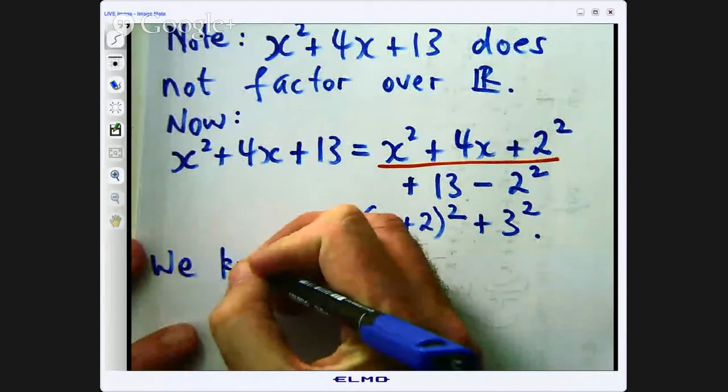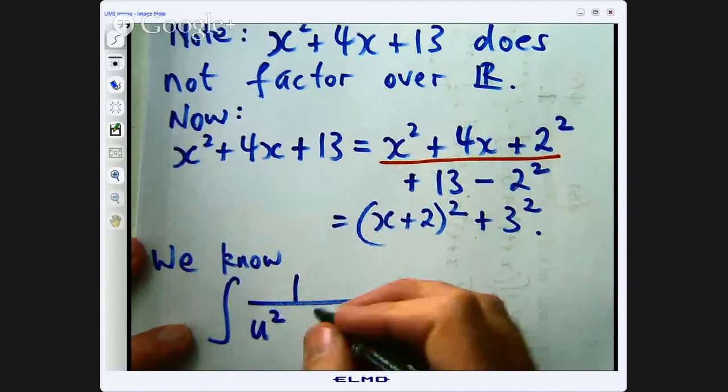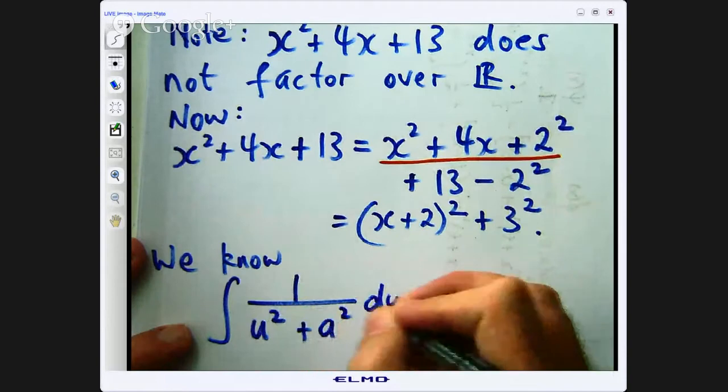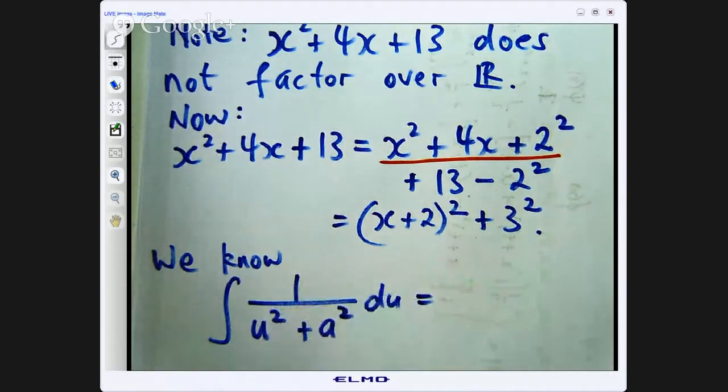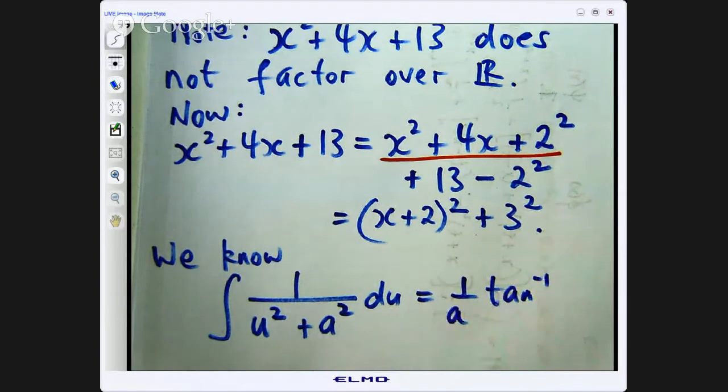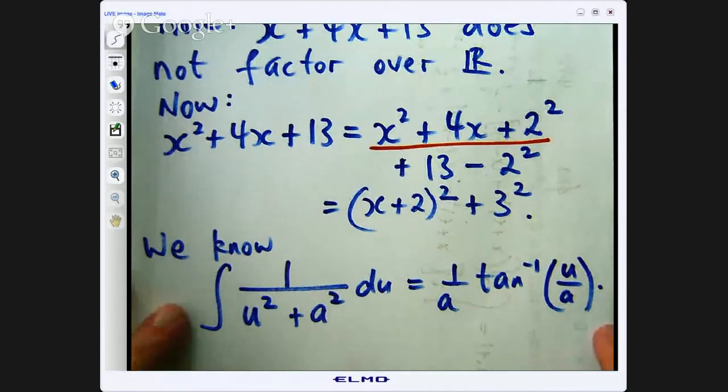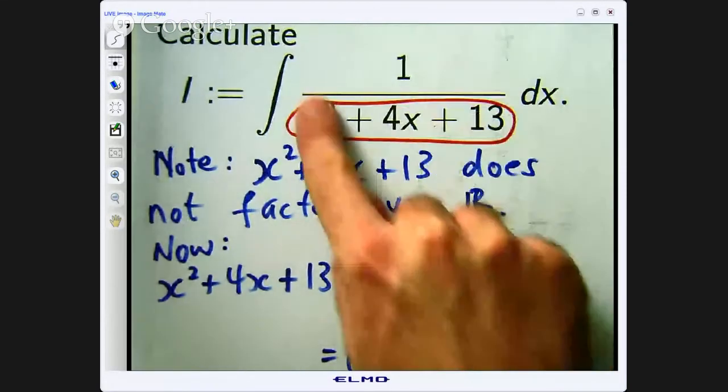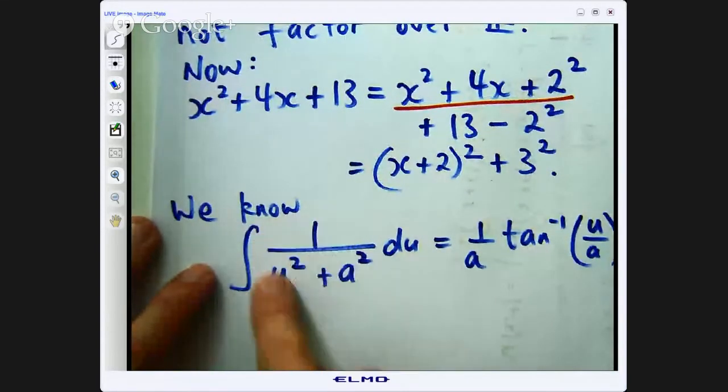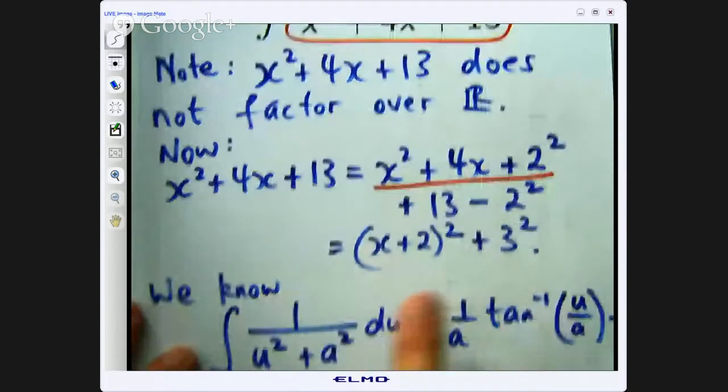So we know or we should know that the integral of 1 on u squared plus a squared where a is the constant du. This is just an inverse tan. It is 1 on a times the inverse tan of u on a plus a constant of integration which I will just leave out here. So how does this actually combine with what we have got. Well what we are going to try to do is get this to look something like this.